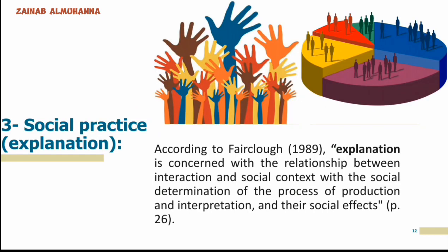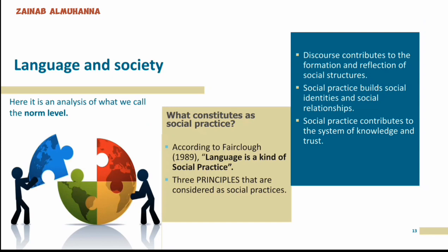The third dimension, which is the final one, is social practice — or we can say explanation. According to Fairclough, explanation is concerned with the relationship between interaction and social context, with the social determination of processes of production and interpretation, and their social effects. Here it is an analysis of what we call the norm level, which is very important in language and society.